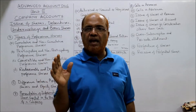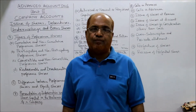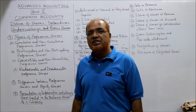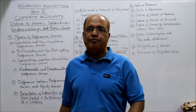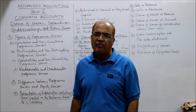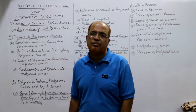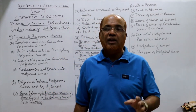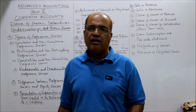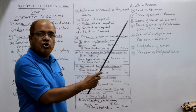For example, if the capital clause specifies 10 crore, then 10 crore is the maximum limit of share capital the company can issue. The company cannot issue share capital beyond this authorized capital. If the company wants further capital in the future, it must alter the capital clause of the memorandum of association. Second: issued capital — that part of authorized capital actually issued by the company to the public. For example, if authorized capital is 10 lakh shares but the company issues only 6 lakh shares, then 6 lakh shares constitute the issued capital.